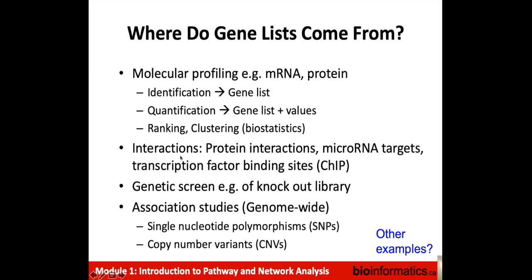Another type of omics data is interactomics. For instance, we can measure protein interactions, microRNA targets, and transcription factor binding sites. These interaction measuring methods provide lists of genes targeted by a protein, microRNA, or transcription factor. A genetic screen like a CRISPR screen can also provide a list of genes, and genome-wide association studies can identify genes linked to SNPs associated with a phenotype of interest. Each of these methods generates a gene list, but the gene lists frequently mean different things based on the methods.